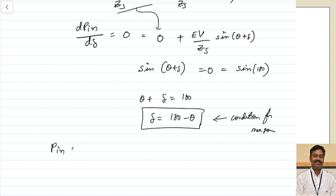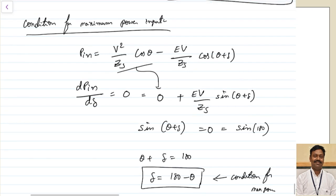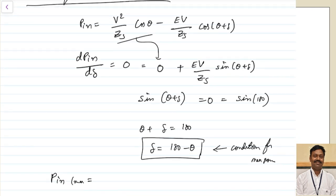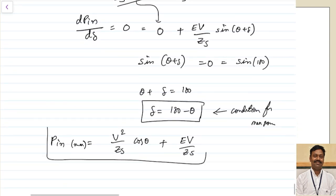To find the maximum power value, substitute δ = 180° − θ into the power equation. The term cos(θ + δ) = cos 180° = −1, so P_input(max) = (V²/Zs)·cos θ + EV/Zs. This is the maximum input power for the synchronous motor.